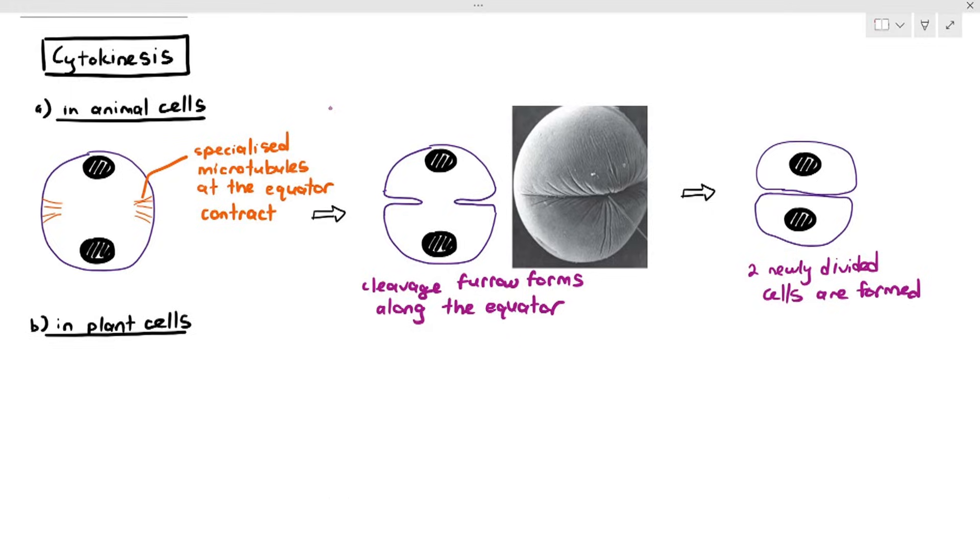In chapter four, we studied things that maintain membrane fluidity like temperature, the length of the fatty acid chain of the phospholipids, the type of fatty acid chain - unsaturated versus saturated - and the presence of cholesterol, which helps to maintain the fluidity. Once that happens, you will get two newly divided cells which are genetically identical. That is cytokinesis in animal cells.